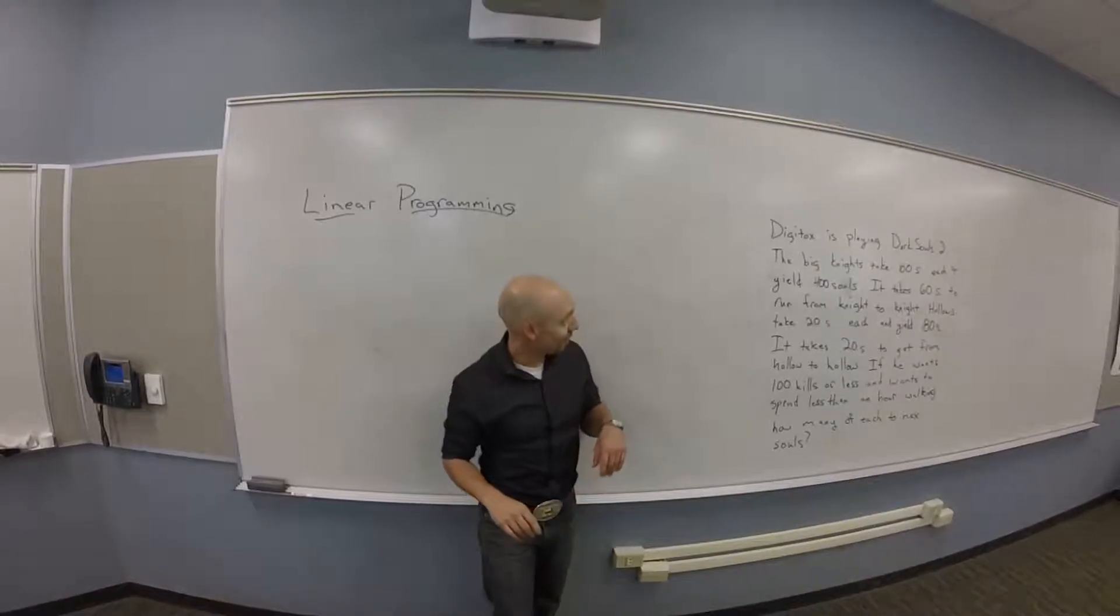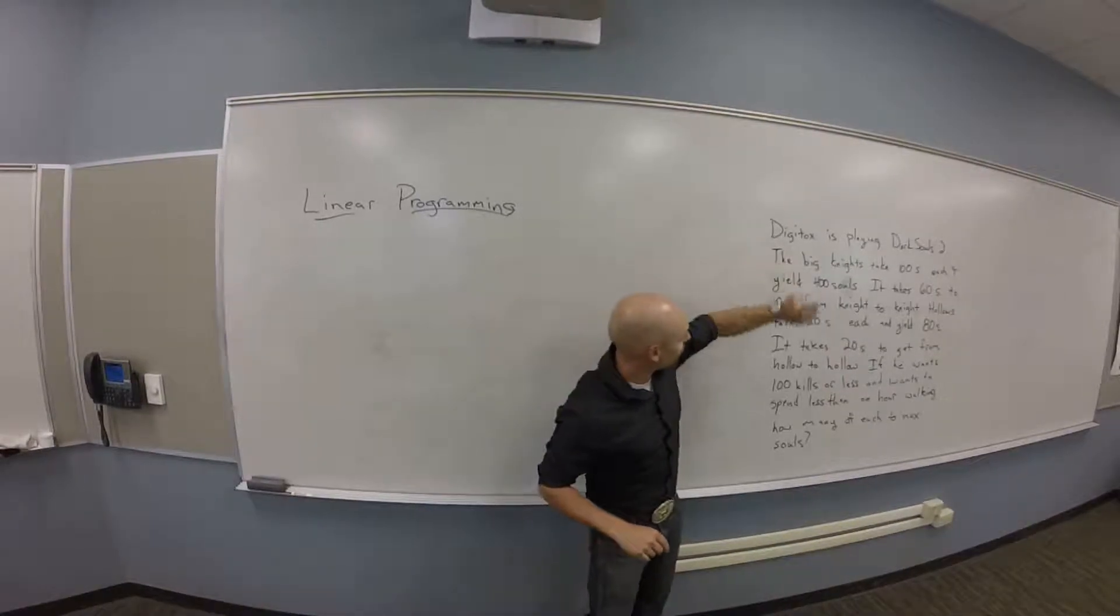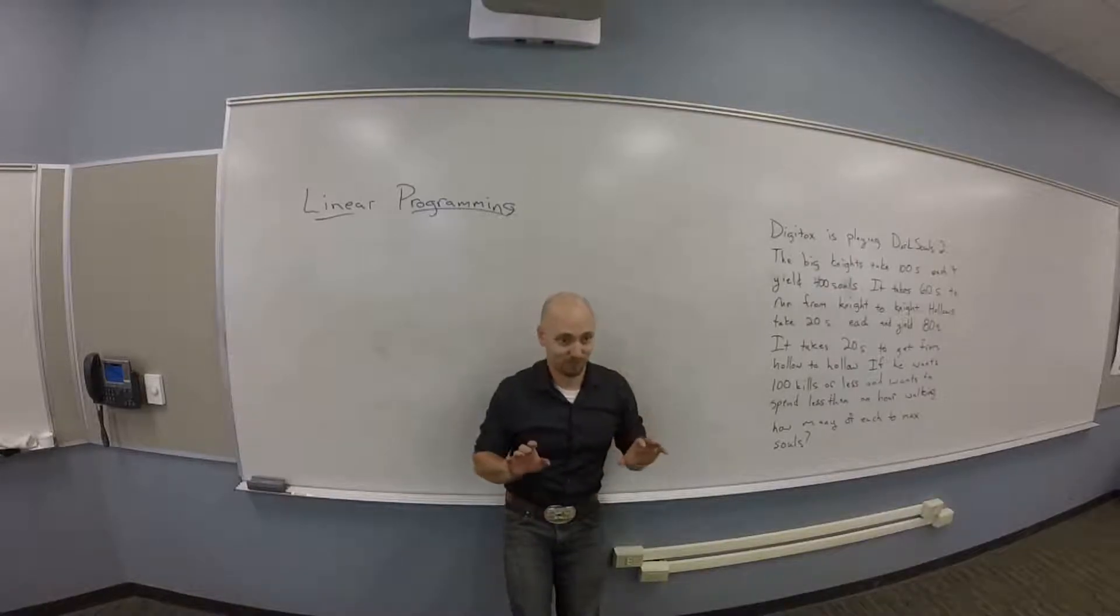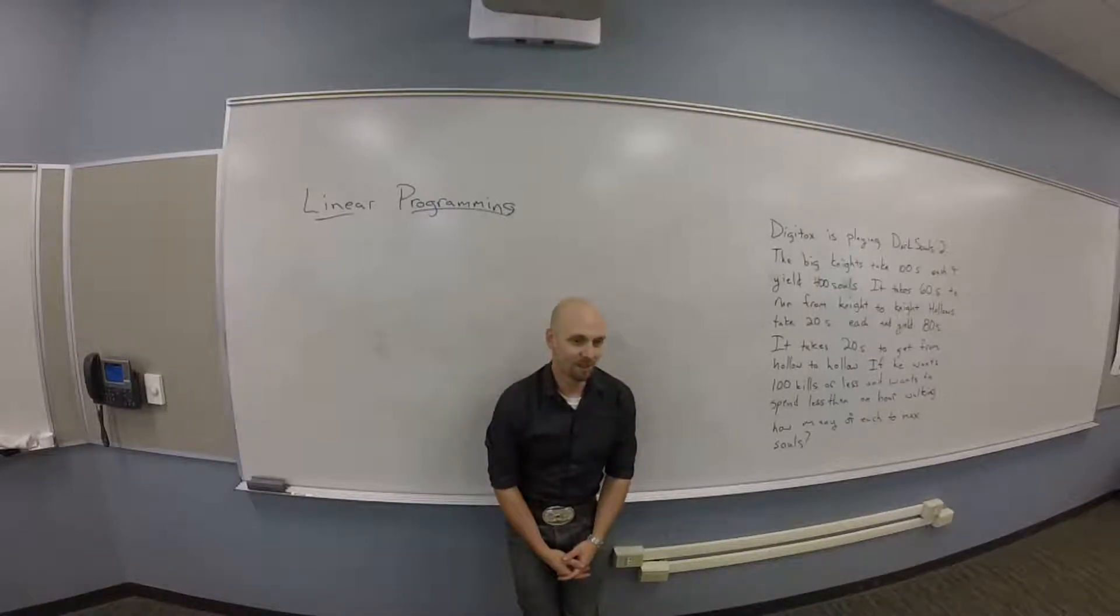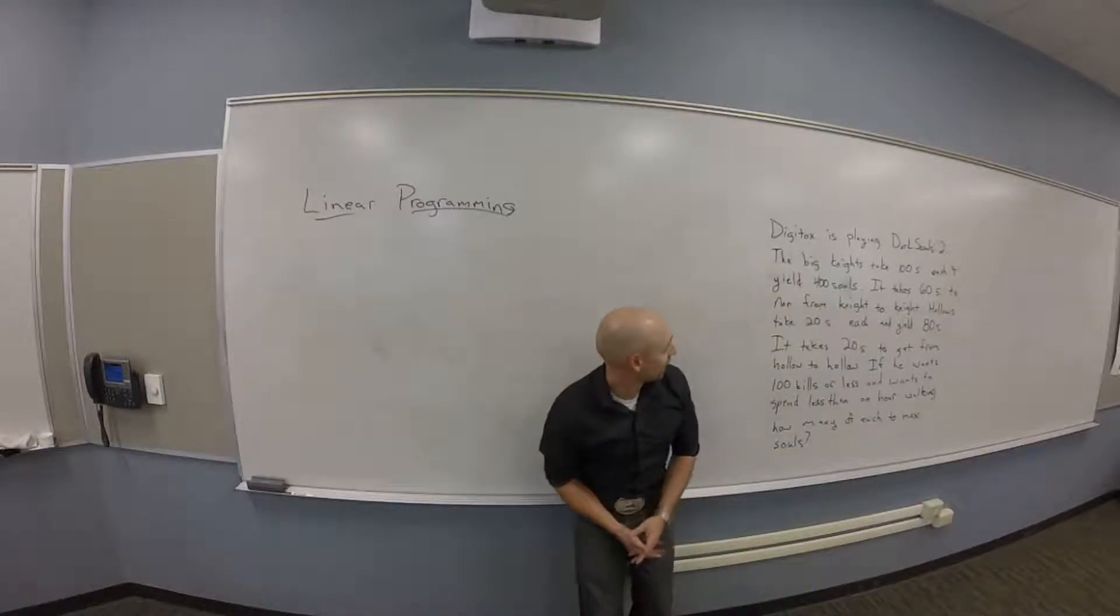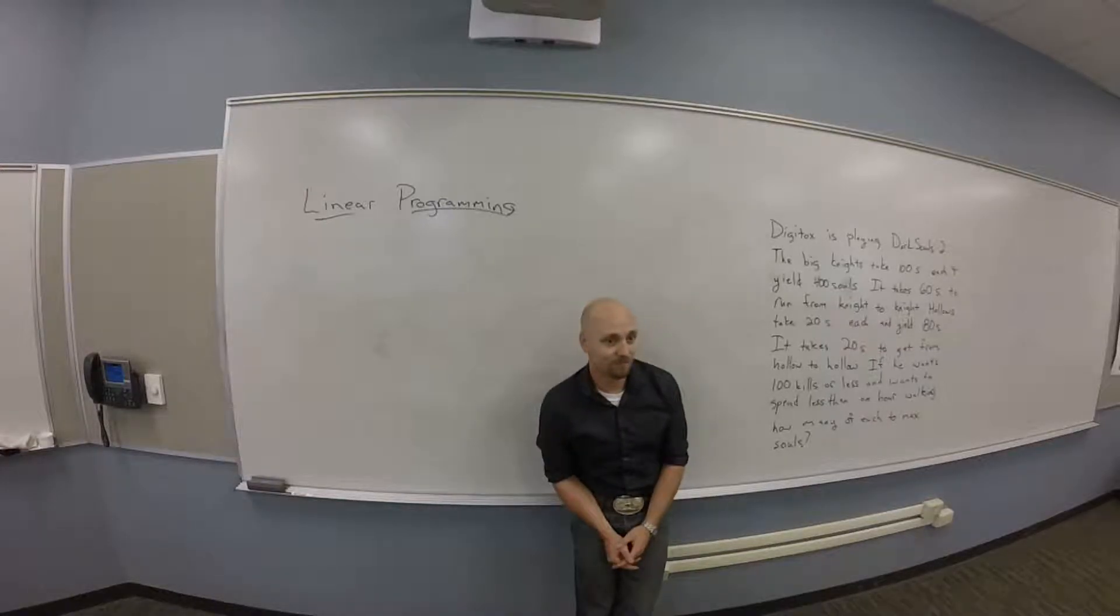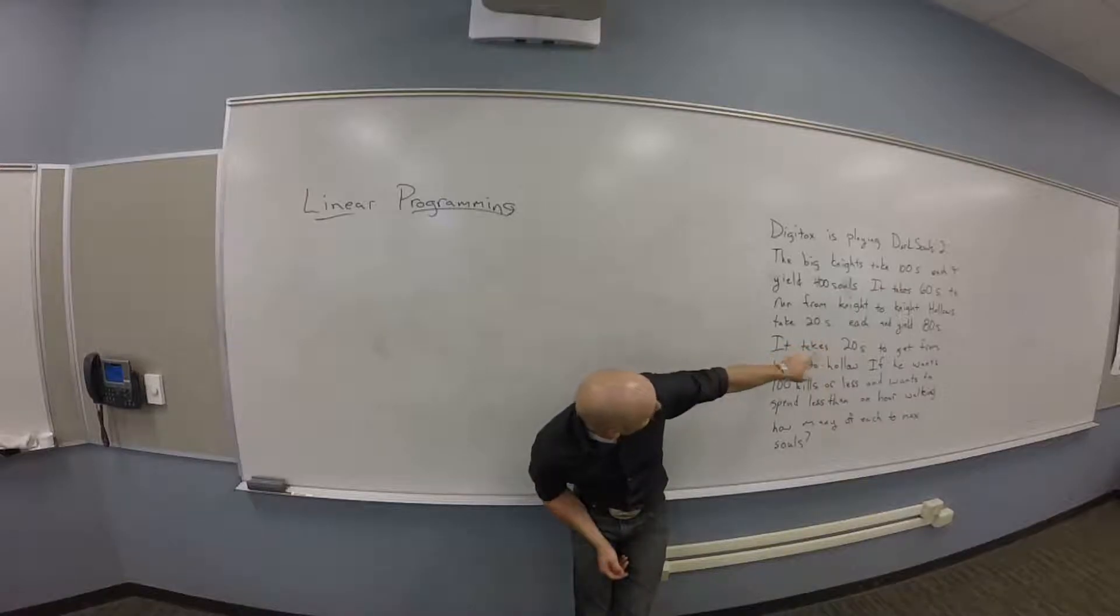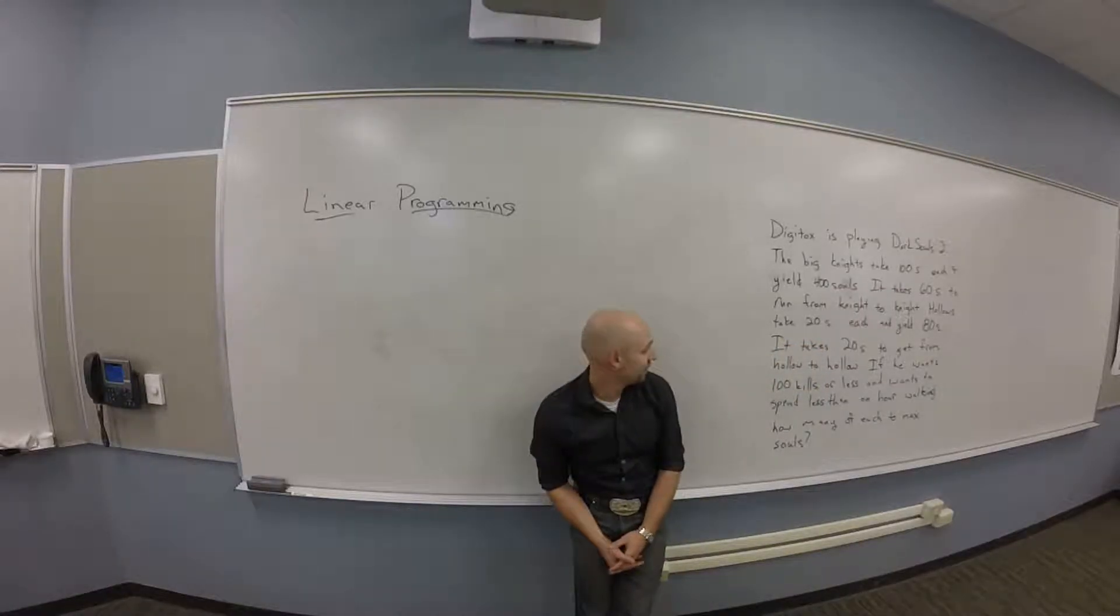So here's your scenario. Digitox is playing Dark Souls 2. This is some kind of an RPG game. Big knights take 100 seconds each to take down and yield 400 souls. It takes 60 seconds to run from knight to knight.